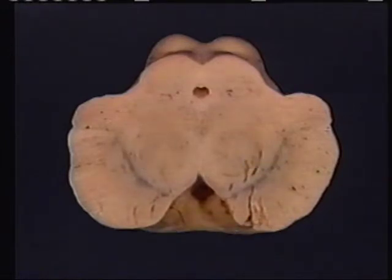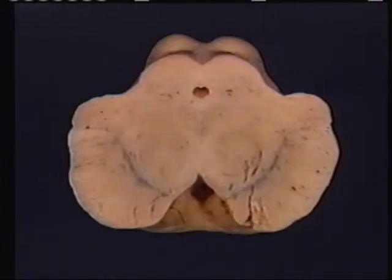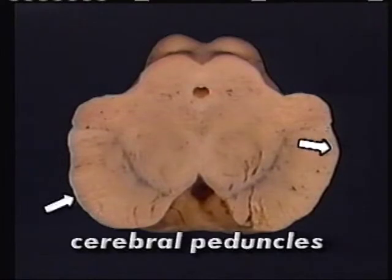The red nuclei are reddish in color due to their rich vascular supply and the iron which is contained within the cytoplasm of the neuron cell bodies. Large collections of descending motor tracts are located within the cerebral peduncles.